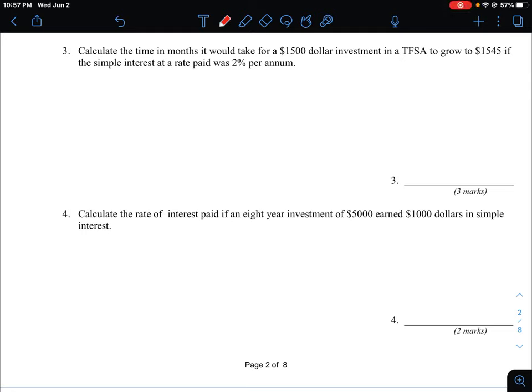Okay, so let's take a look at question three. We're asked to calculate the time in months it would take for a $1,500 investment to grow to $1,545 if the simple interest was paid at a rate of 2% per annum.